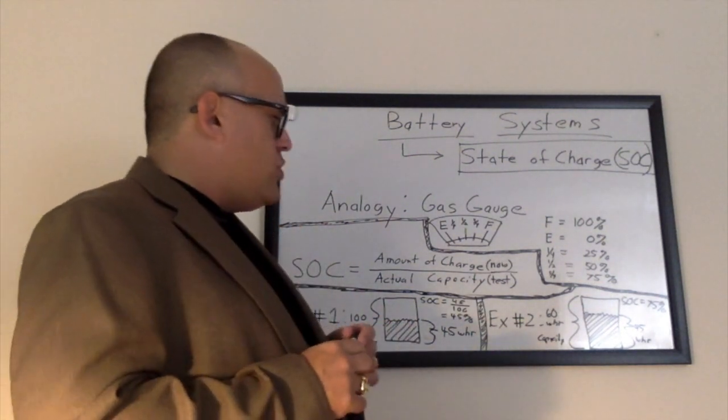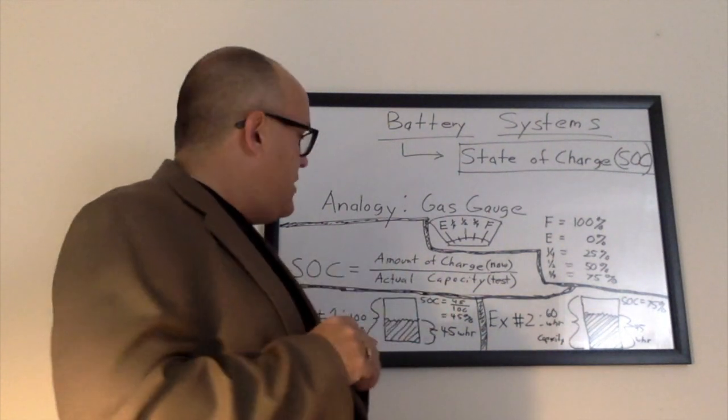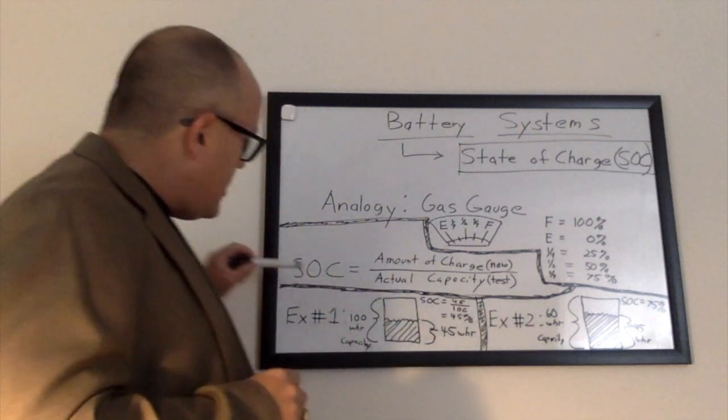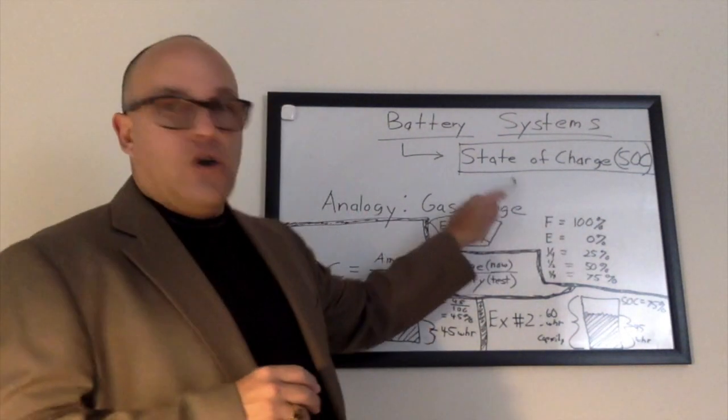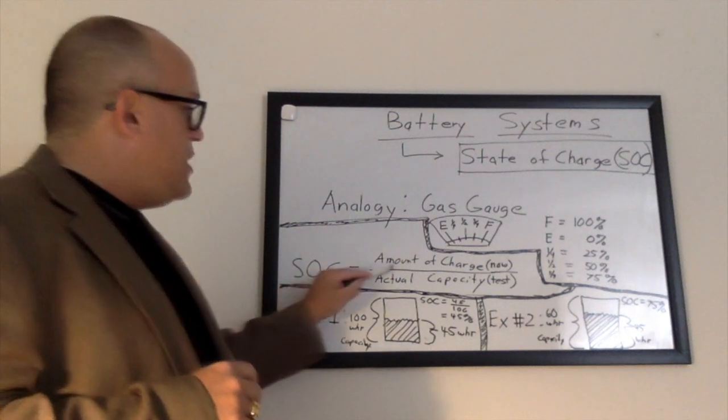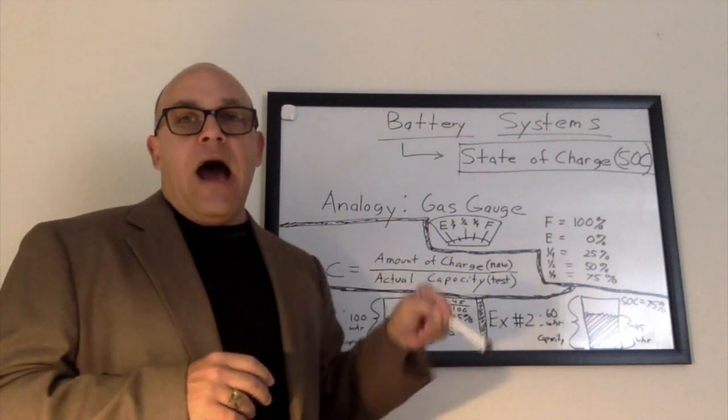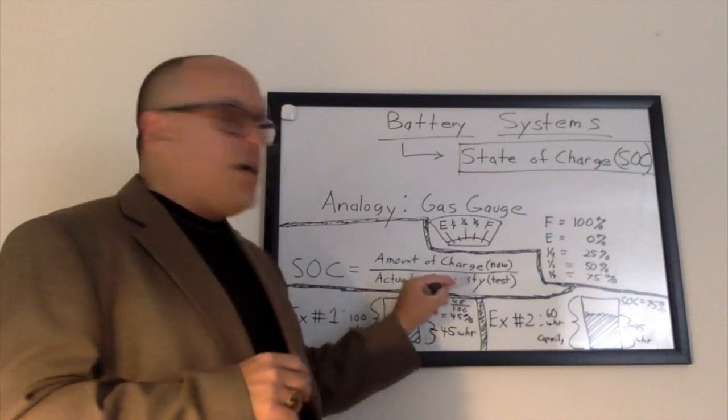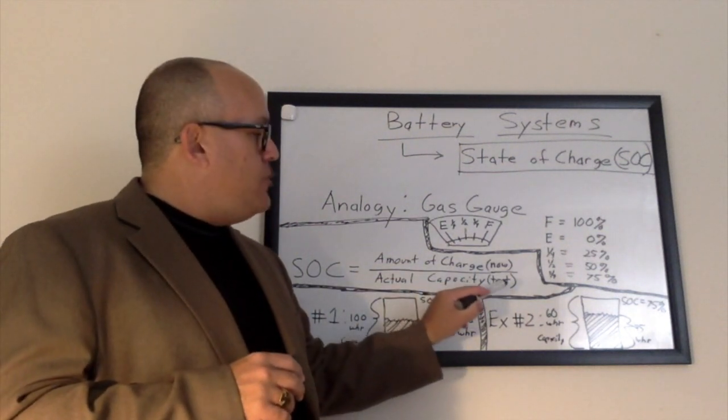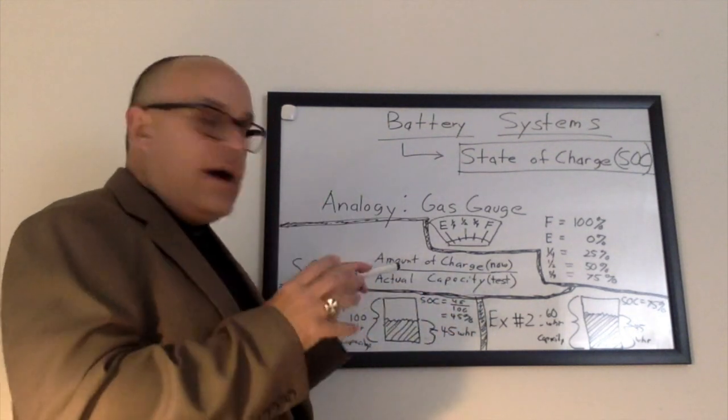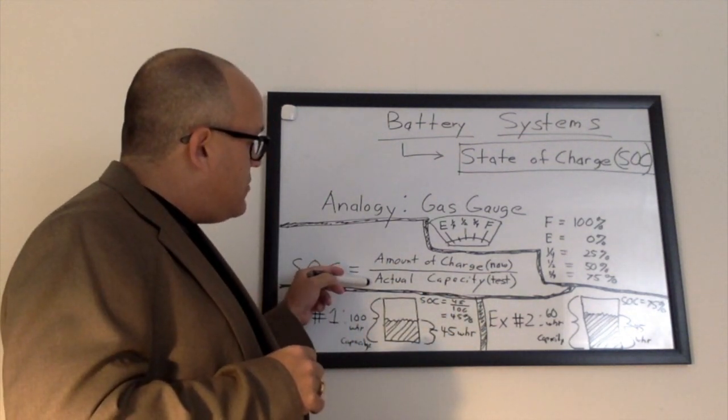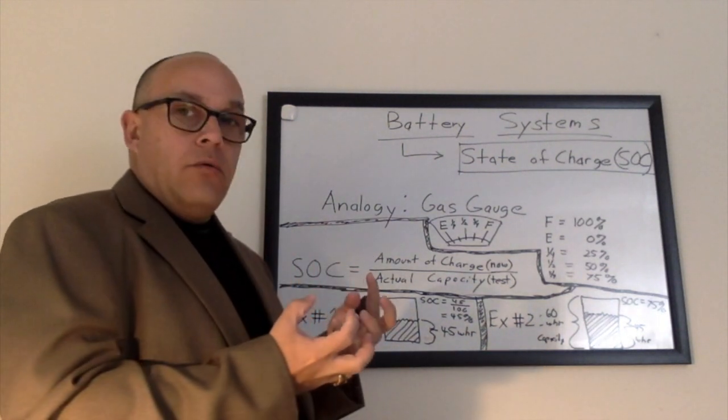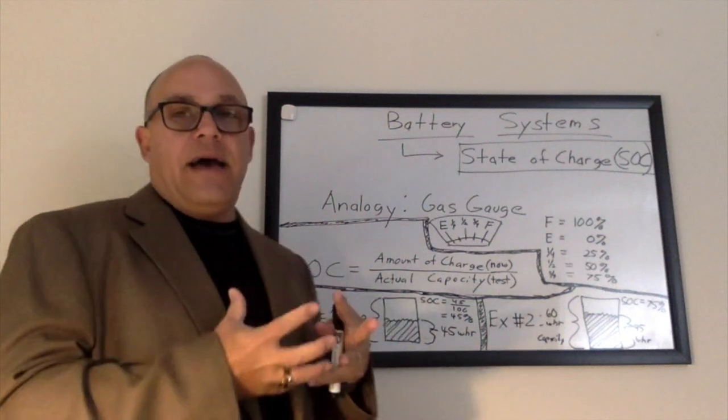Except state of charge specifically for batteries has a couple little modifications we have to talk about. So SOC, state of charge, equals the amount of charge now in the system divided by the actual capacity if you would perform a test on the capacity right now. That's what the actual is.